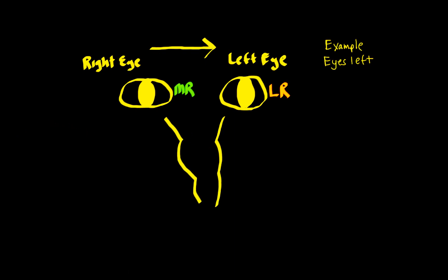Of course, we need the brain stem here, which is made up of the midbrain, pons, and medulla, to be able to coordinate all this because we need cranial nerves. So let's start with the left lateral rectus.